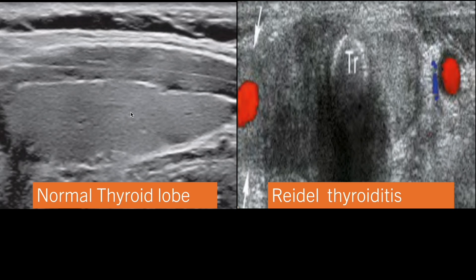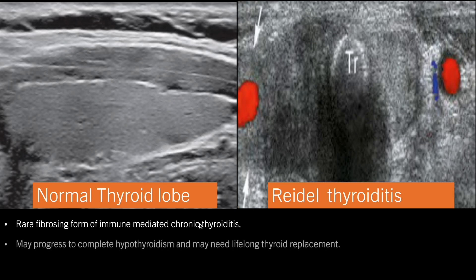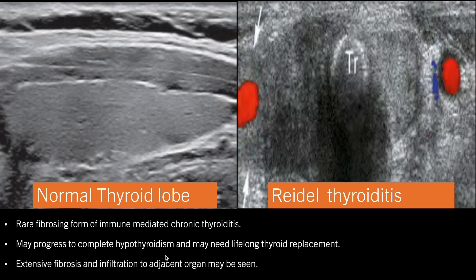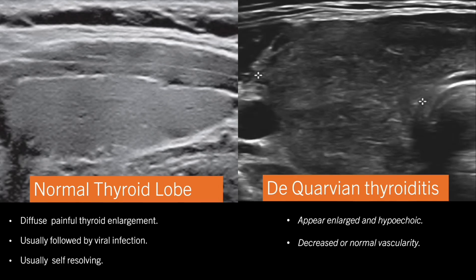Another important cause of diffuse thyroid enlargement is Riedel's thyroiditis. On ultrasonography, we can see this is the normal thyroid lobe compared to Riedel's thyroiditis. The trachea is the midline structure, with the left and right thyroid lobes on either side. Riedel's thyroiditis is a rare fibrosing form of immune-mediated chronic thyroiditis; it may progress to complete hypothyroidism requiring long-term thyroid replacement. Extensive fibrosis and infiltration to adjacent organs may be seen — in this image, the right thyroid lobe has infiltrated the carotid vessels.